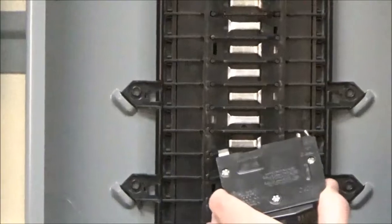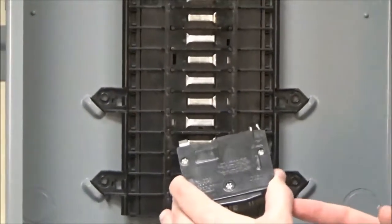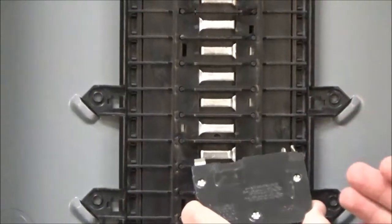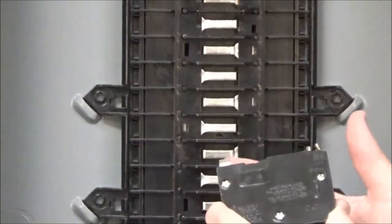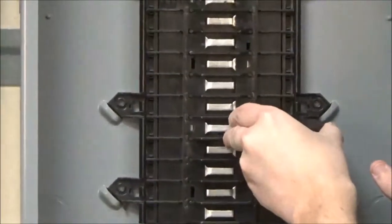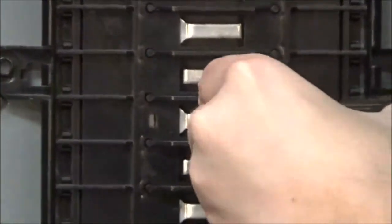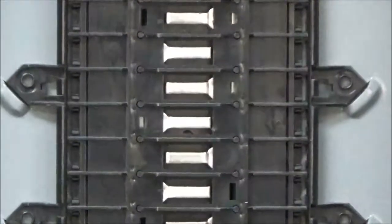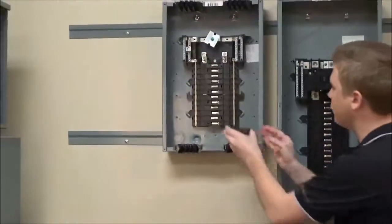To install them, you will first put the back rail clip onto the rail and then rock the breaker forward so that the bus clip can make the connection with the bus. It will install the exact same way on the plug-on neutral panel.